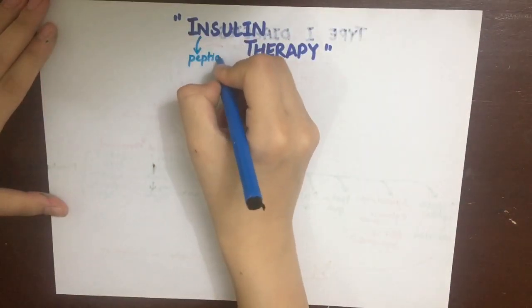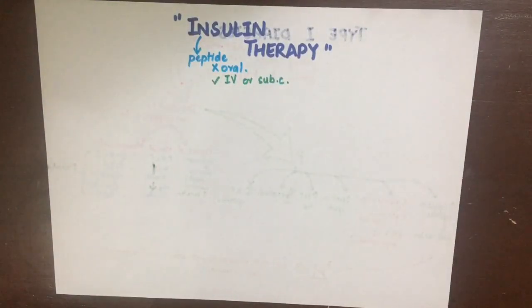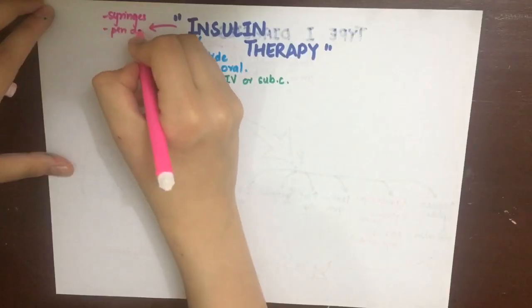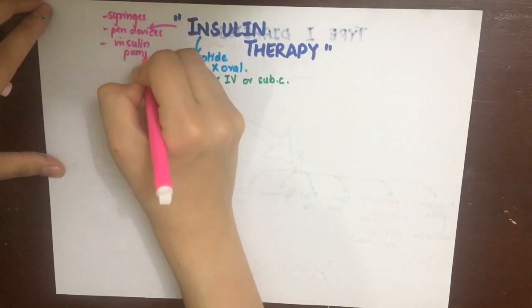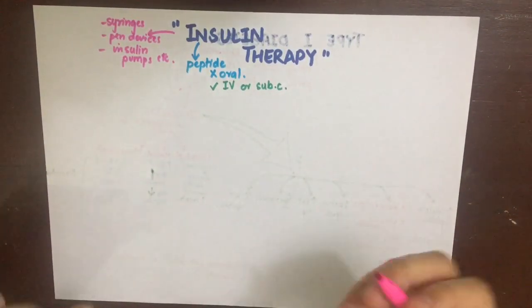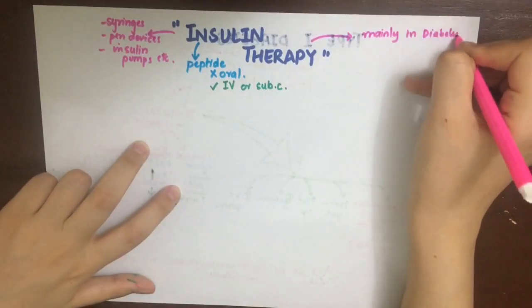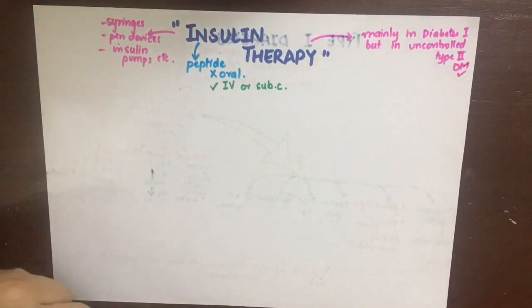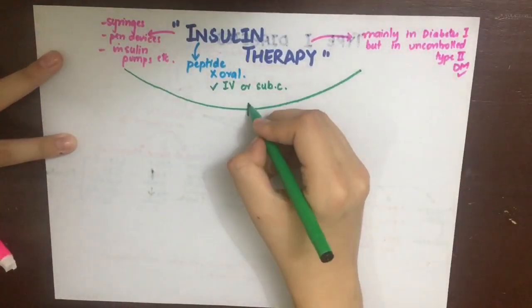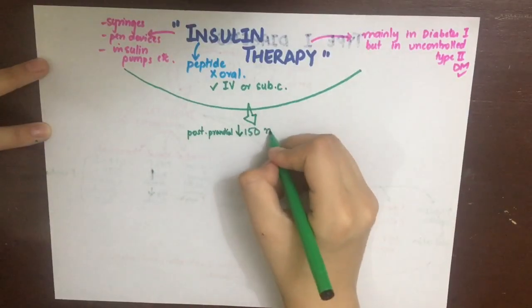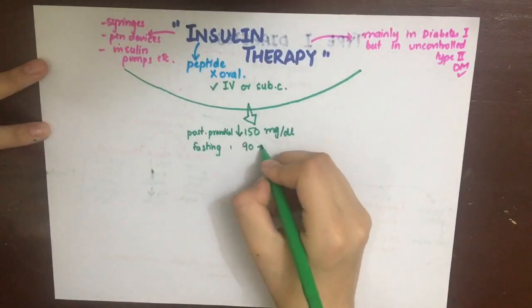Insulin cannot be administered orally because it is a peptide and will be digested. So we give it IV, subcutaneously, or intramuscularly. It can be administered via syringes, pen devices, insulin pumps, etc. Insulin is mainly used in type 1 diabetes, but also in uncontrolled type 2 diabetes not controlled by diet, lifestyle changes, or oral hypoglycemic drugs. The purpose of insulin therapy is to maintain postprandial blood glucose less than 150 mg/dL and fasting blood glucose between 90 to 120 mg/dL.